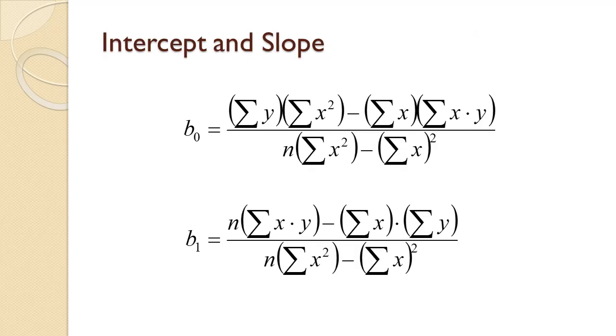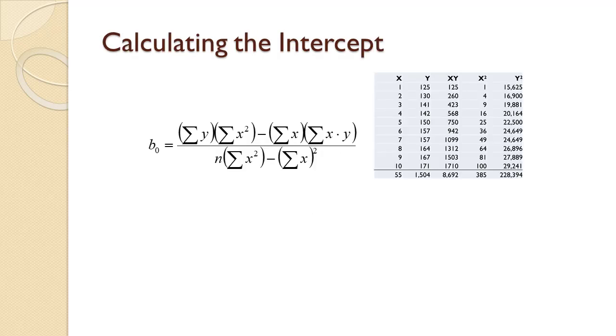The slide shows the formula for calculating the intercept and slope. B sub 0 is the intercept and B sub 1 is the slope. While these formulas also look complex at first, notice that they use the exact same totals that we computed for the correlation coefficient. That means we are ready to do the calculations. We will calculate the intercept first, the formula shown on the slide.